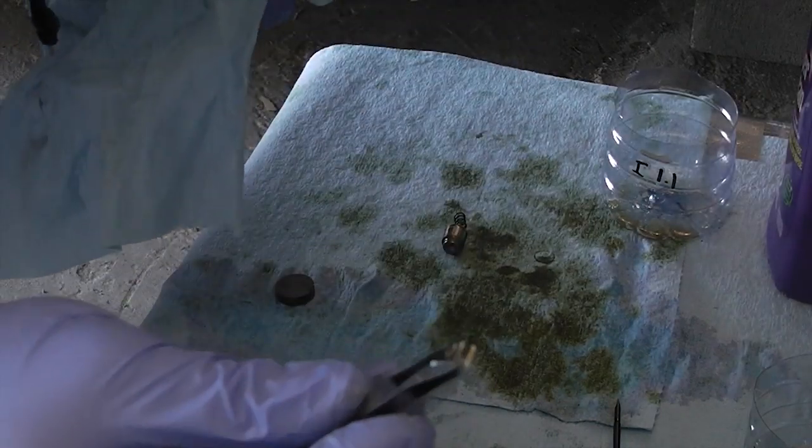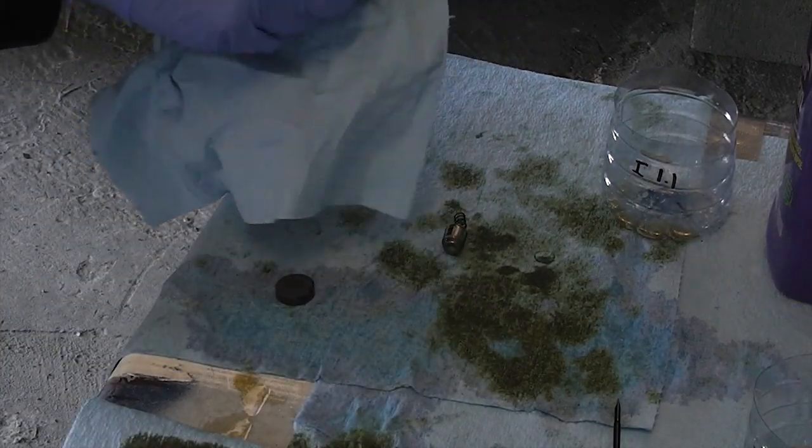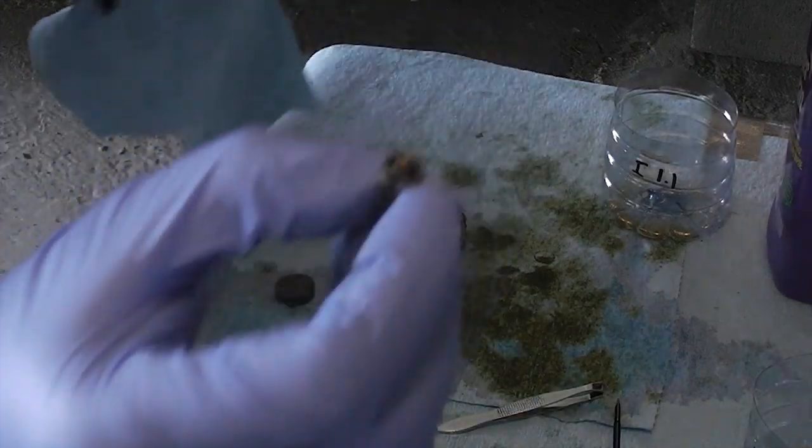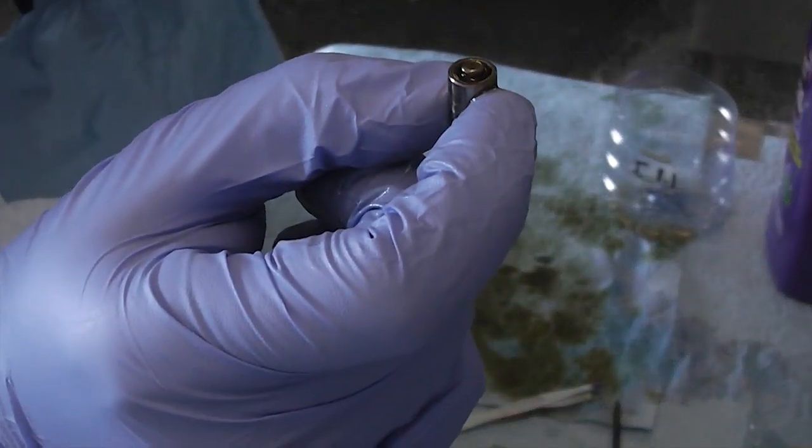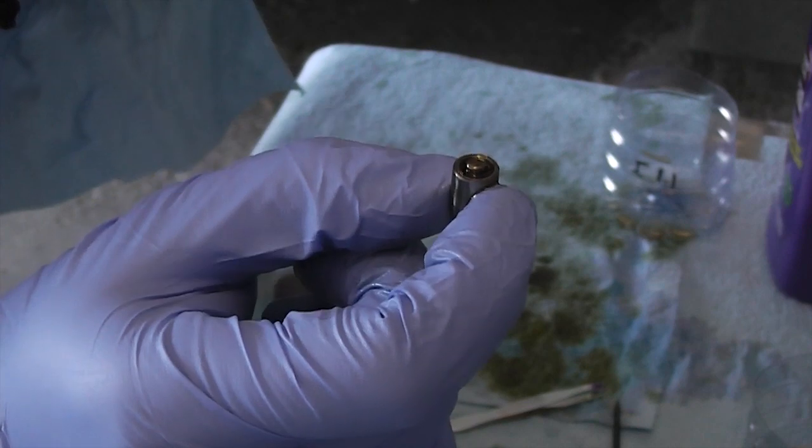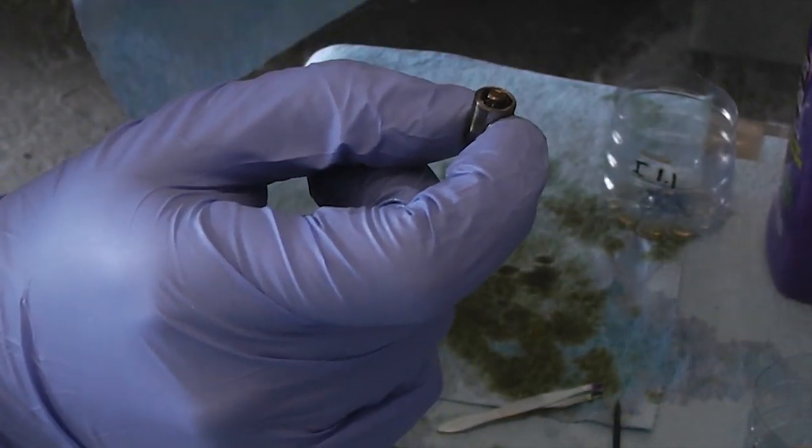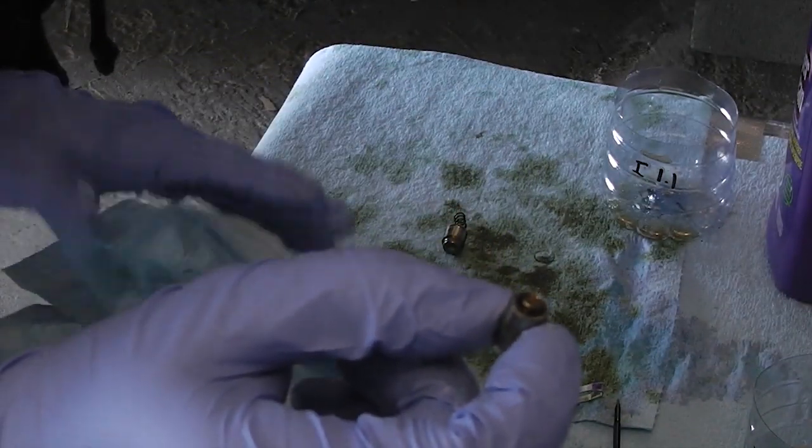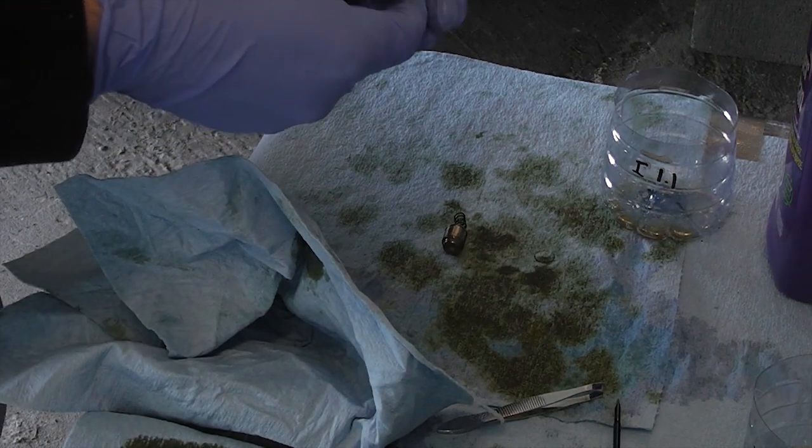Next, you're going to grab some tweezers, and you're going to remove the little cap that's on top here. And be careful because there's a tiny, tiny spring and a tiny ball check valve that you don't want to lose. So be very careful when this comes out.